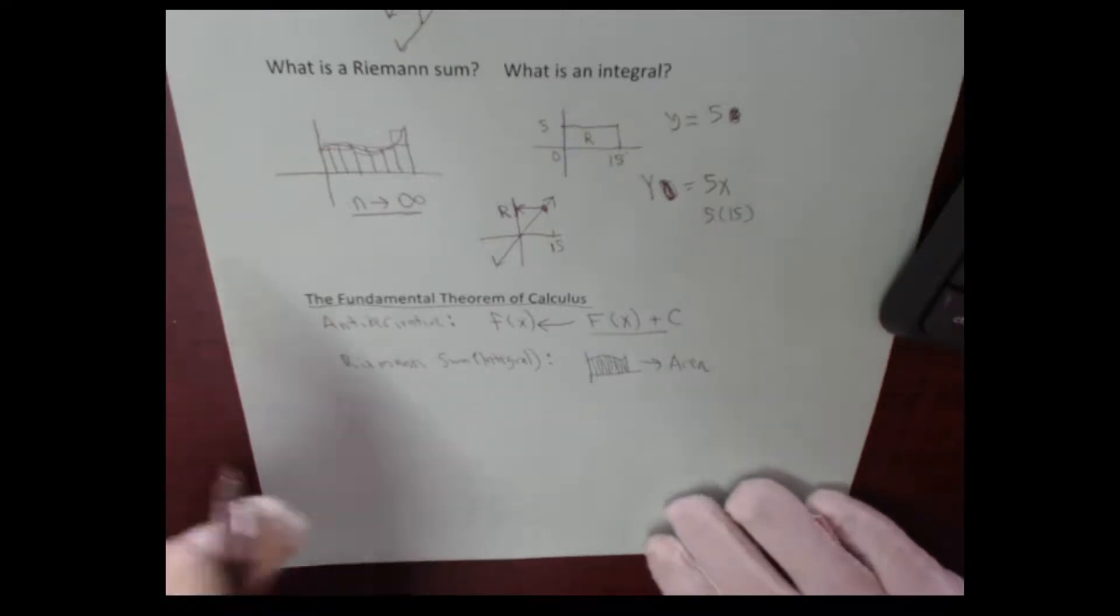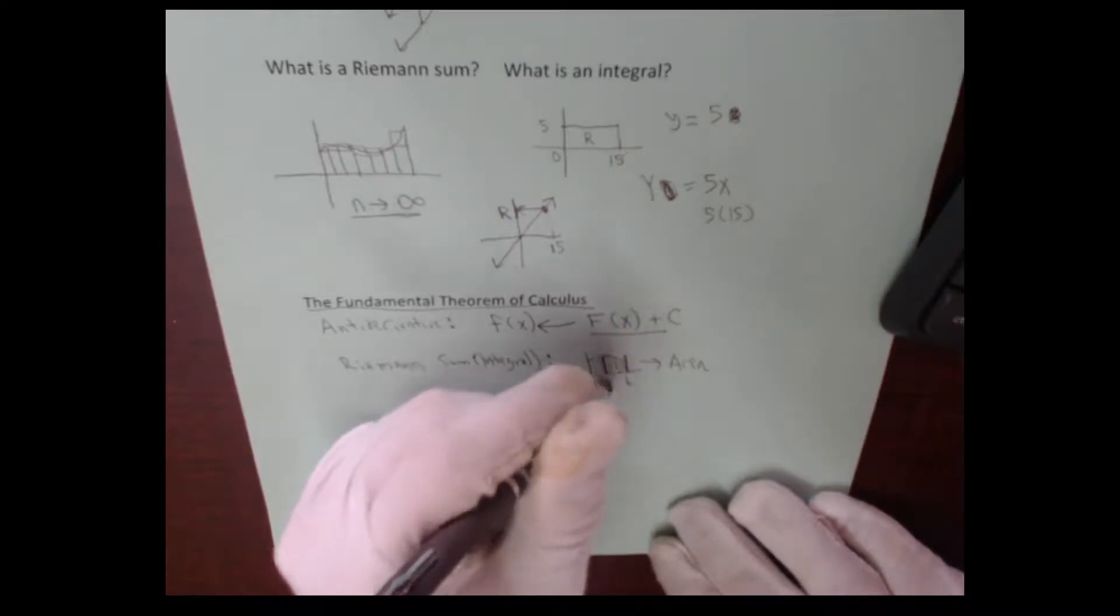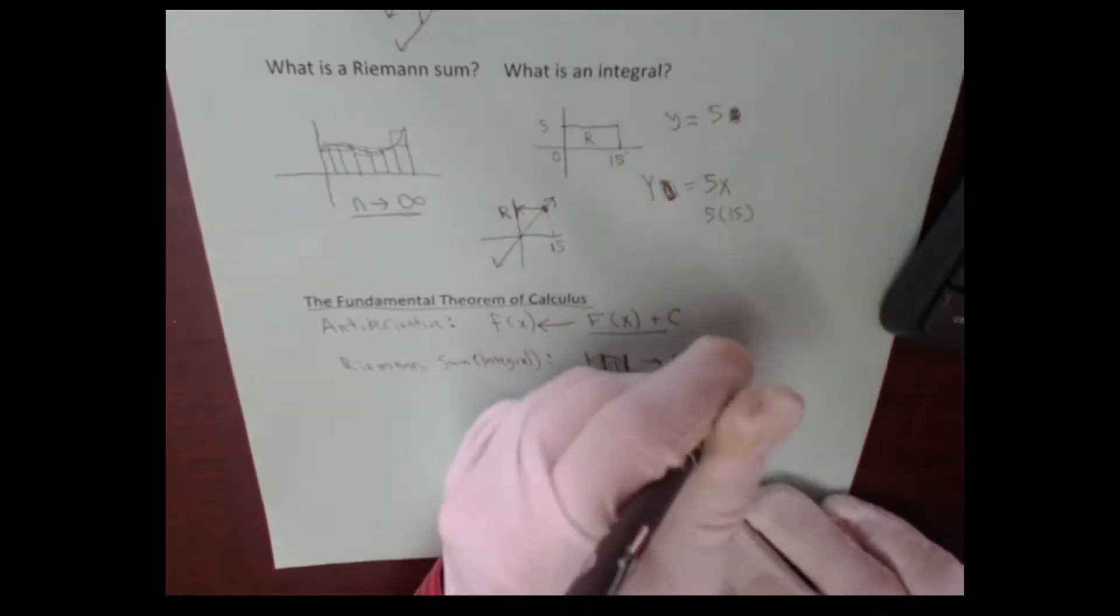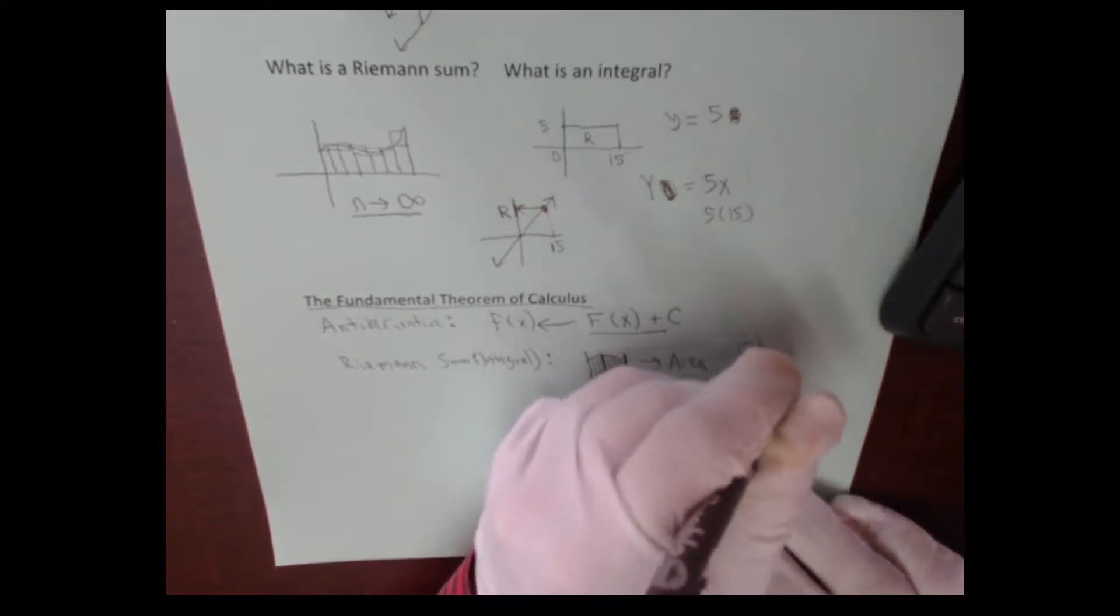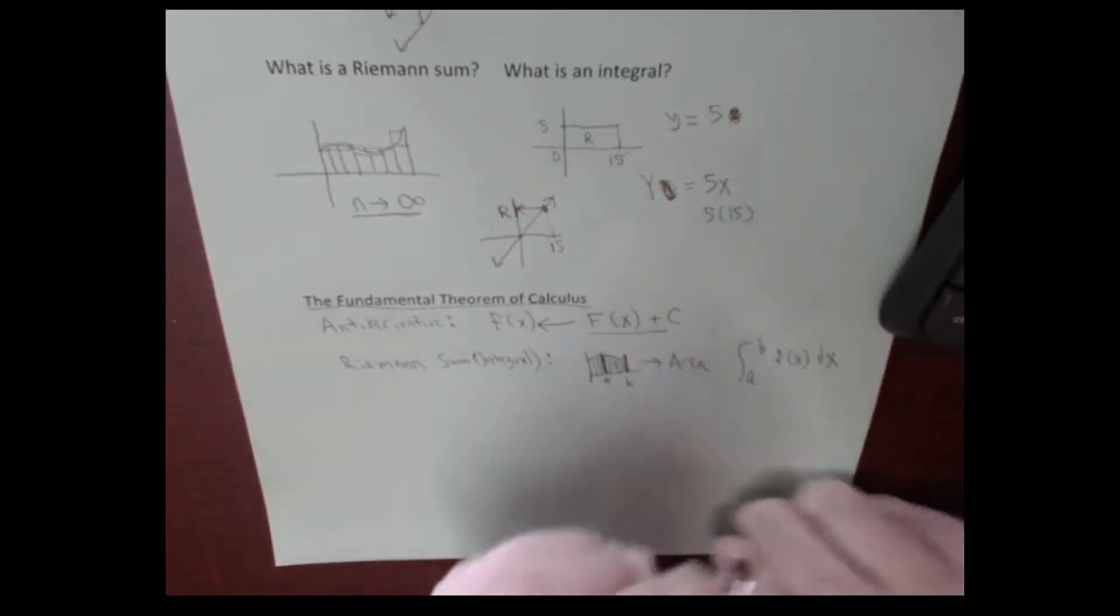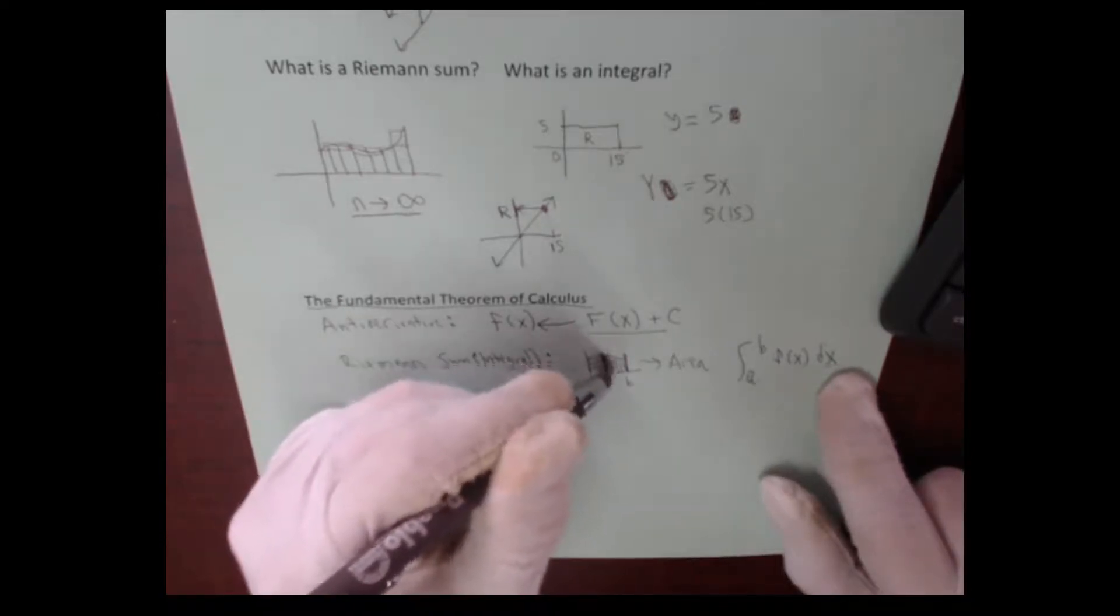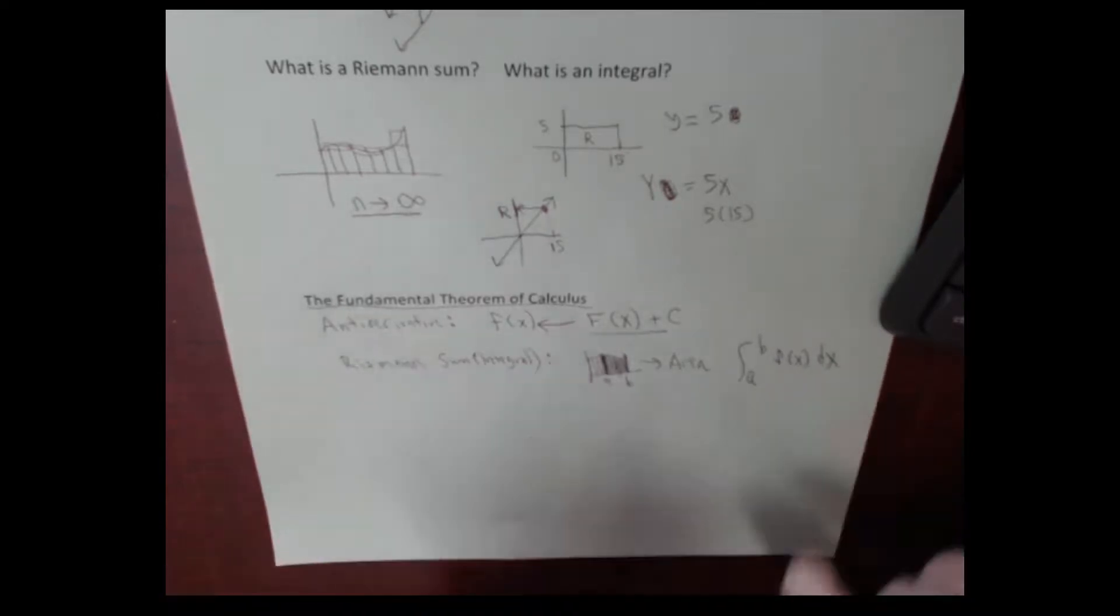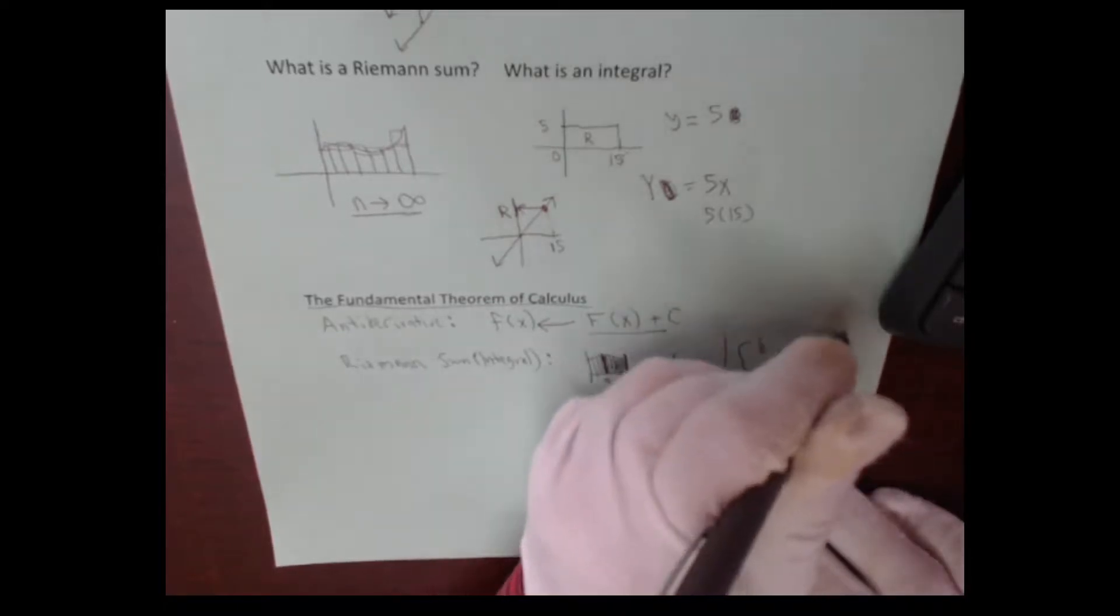So when we're doing this, let's say we're just trying to find this area right here from A to B. When we're looking at the integral of that, we're saying the integral from A to B of your function with a differential. And this little dx means the infinitely thin rectangles that we're approximating.